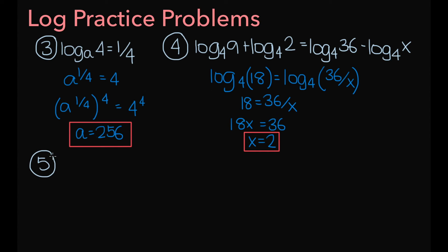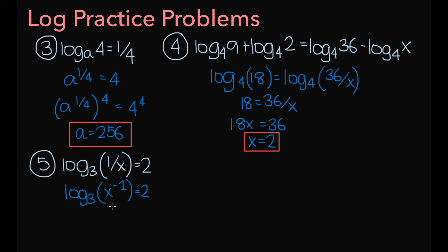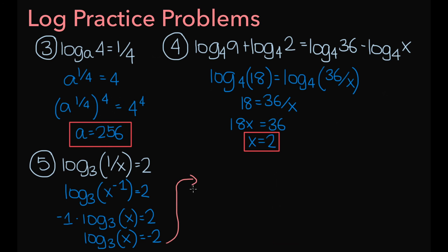For the fifth and final problem, we have the log base 3 of 1 over x equals 2. The trick is to rewrite this as the log base 3 of x to the negative 1 equals 2, since x to the negative 1 equals 1 over x. Applying the power rule, we bring the negative 1 to the front: negative 1 times the log base 3 of x equals 2. Dividing by negative 1 gives the log base 3 of x equals negative 2. Converting to exponential form: 3 to the negative 2 equals x, so x equals 1 over 3 squared, which means x equals 1 ninth.